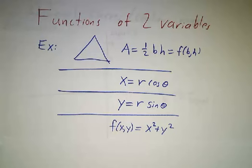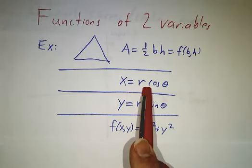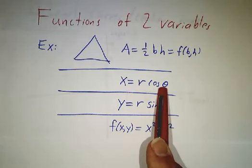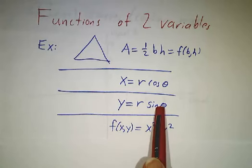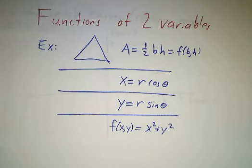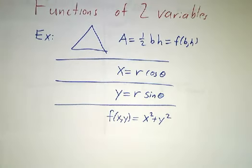When we did polar coordinates, we had x being r cos theta, well, that's a function of r and theta. We had y being r sin theta, that's a function of r and theta. And then we have just garden variety formulas, like some function of x and y being x squared plus y squared. So there are lots of these problems where something depends on more than one variable. And we want to figure out how to draw a picture of it.